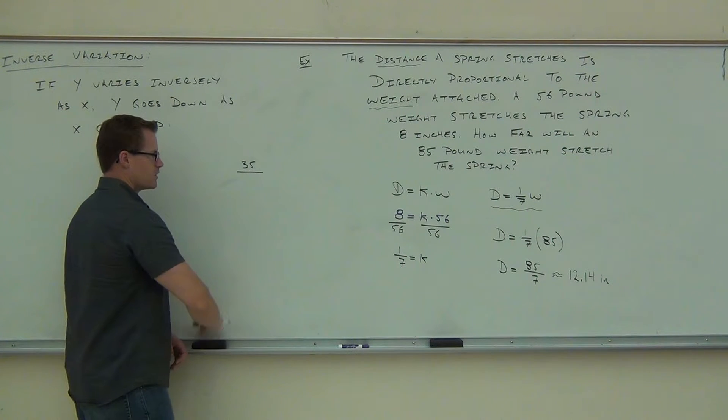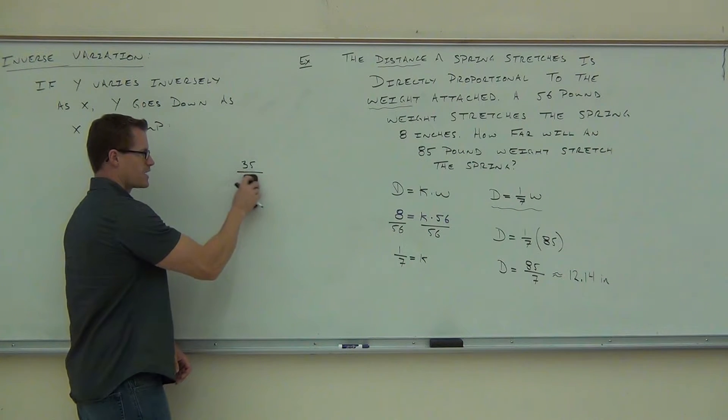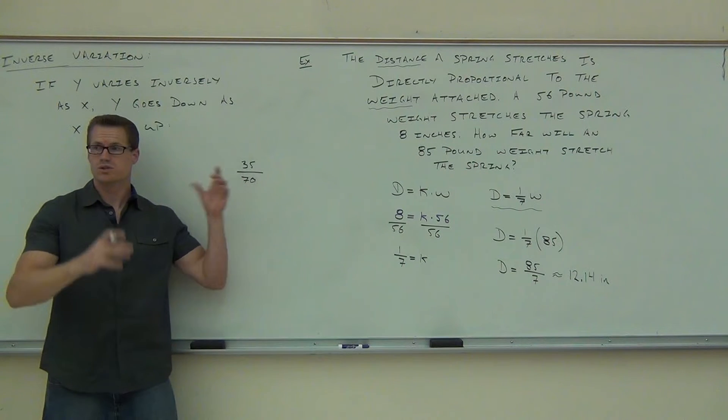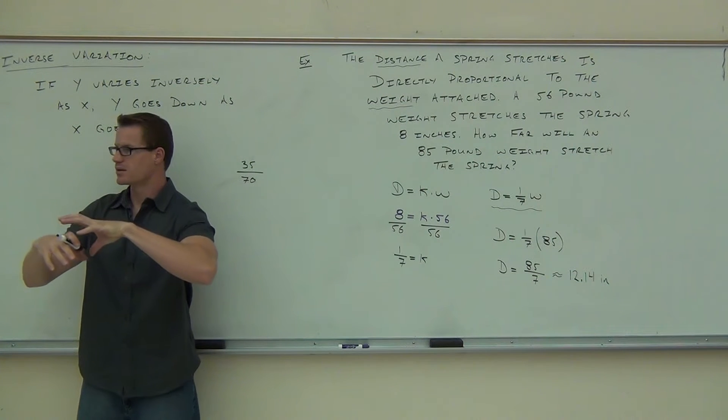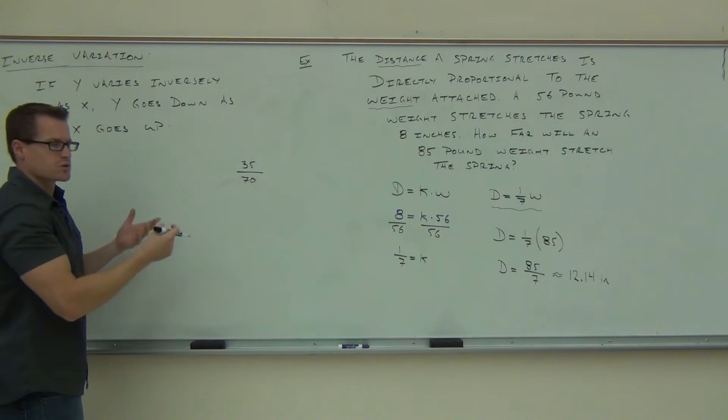If I divide it by 35, I'm going to get 1. If I keep going, if I divide it by 70, I get 1 half. So, as this number grows, this quantity becomes smaller. Do you see the idea there? So, this idea of this division, this is what inversely proportional is all about.